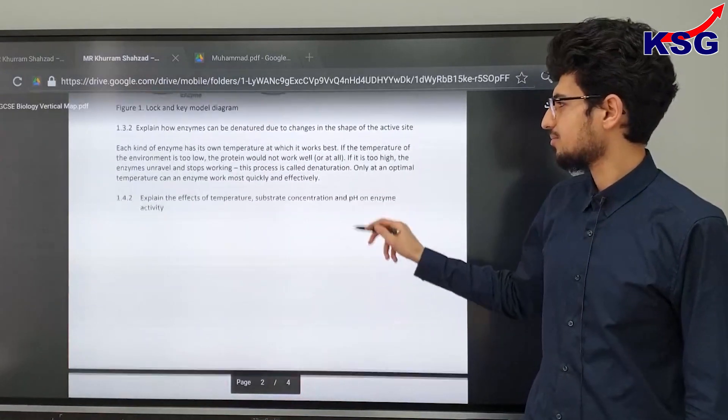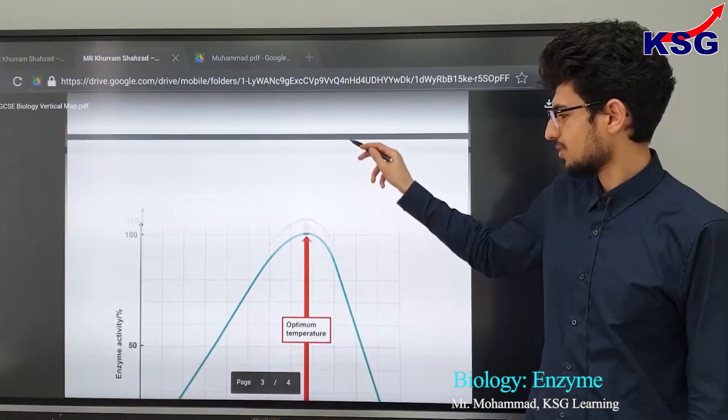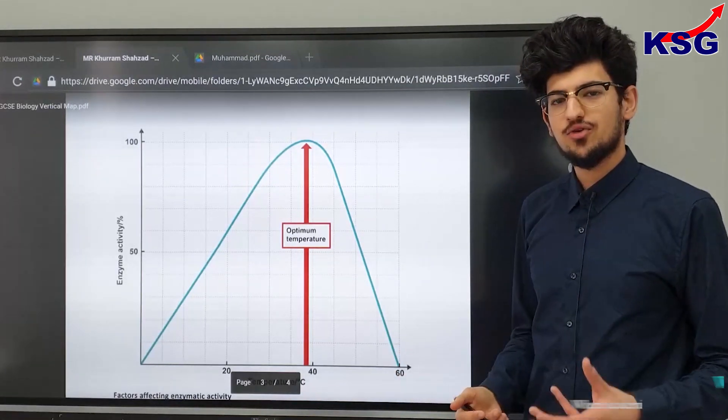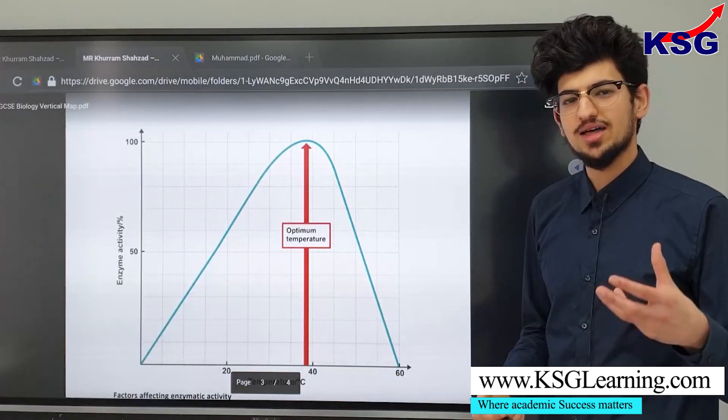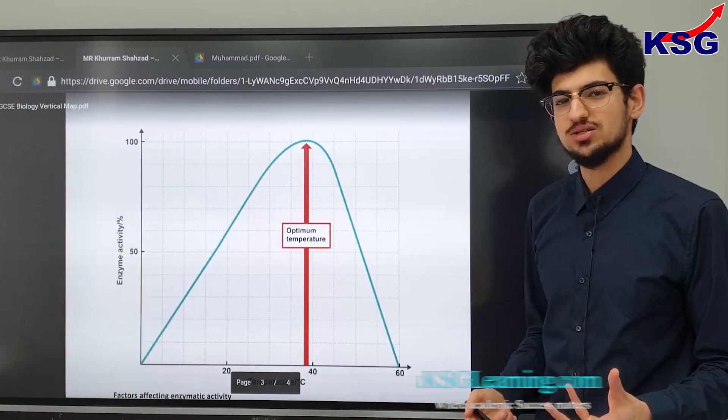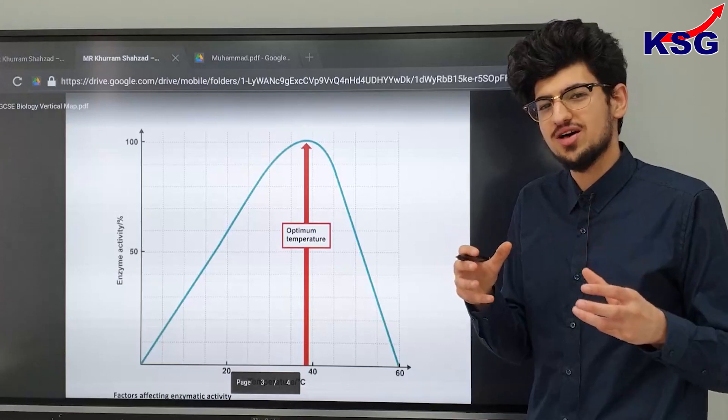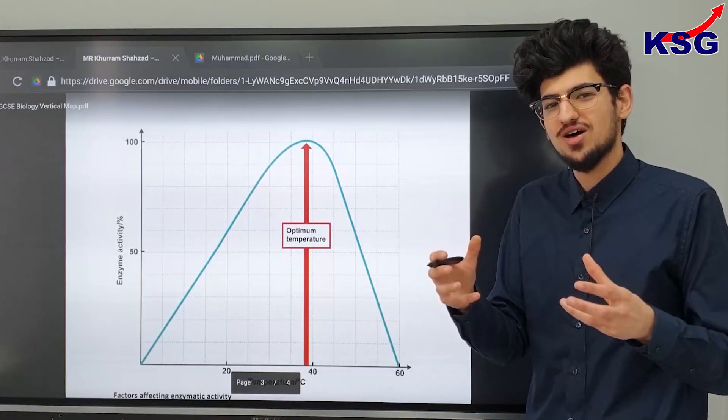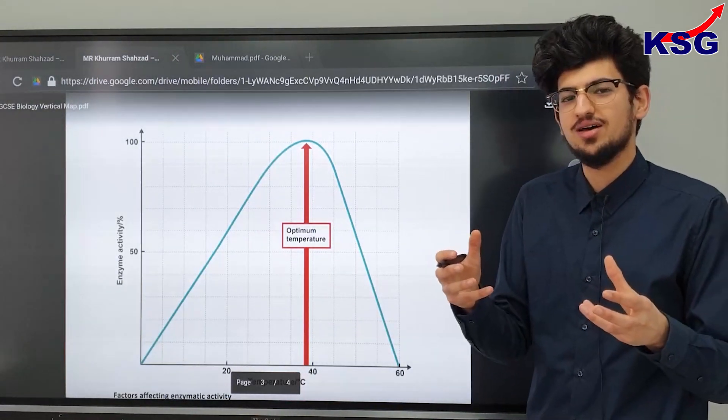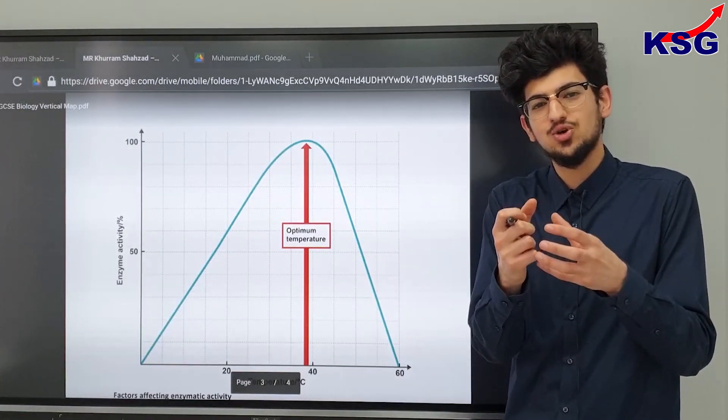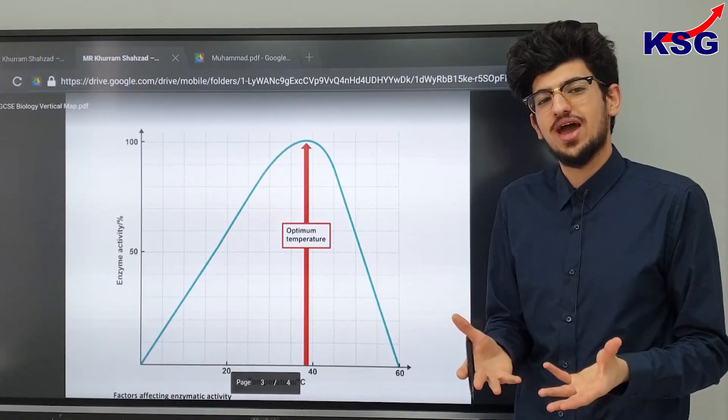So as we can see here we might remember from chemistry studies that temperature increases the rate of reaction and the reason simply is that when there's a higher temperature things are moving around faster and because they're moving around faster they're going to be bumping into each other and therefore it's more likely that you have this enzyme that bumps into your reactant and is able to make the reaction happen.